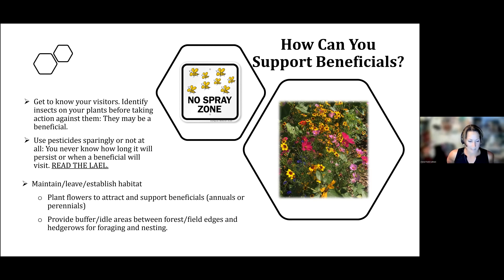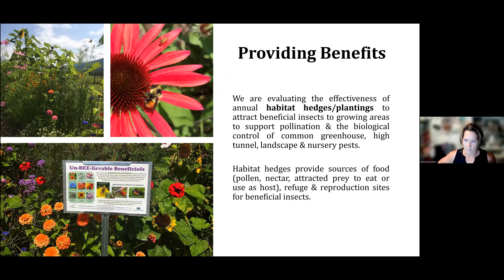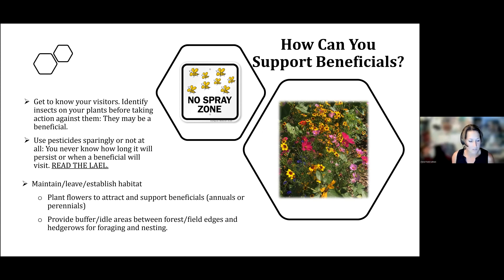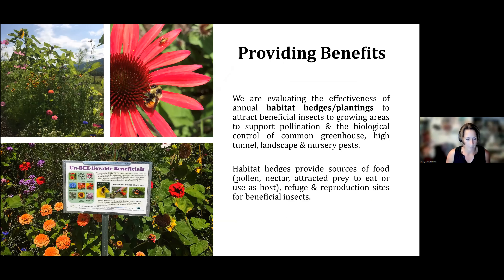Finally, maintaining and providing suitable habitat in the form of flowering plants is essential. You want to maintain flowering plants to attract and support pollinators. Things like buffer and idle areas between forest and field edges and hedgerows are really good for foraging and nesting. Sometimes it's good not to keep your garden super tidy, because a lot of species need that leaf litter in which to overwinter, and other species need secure places to mate and reproduce.